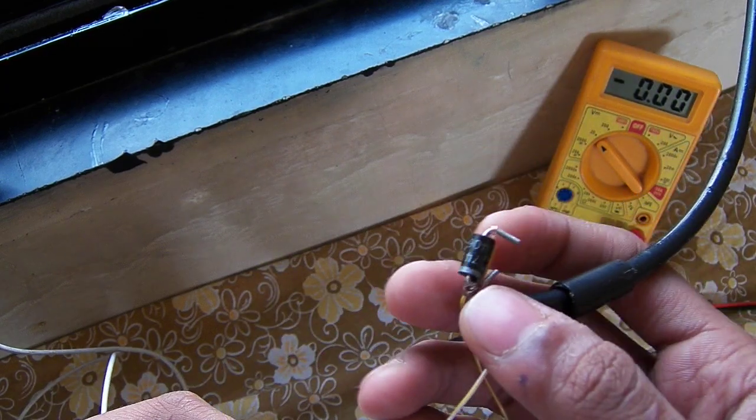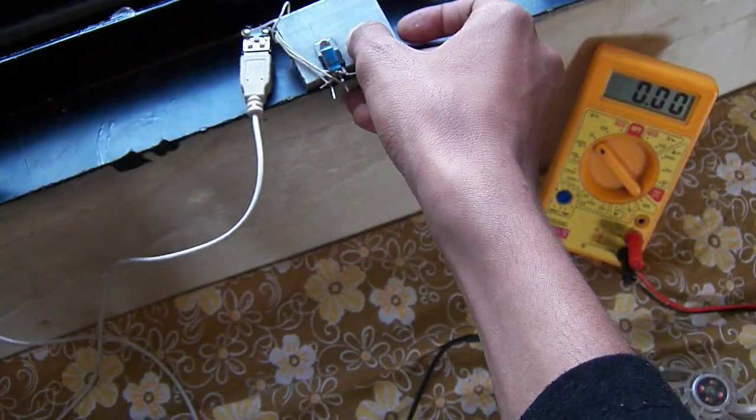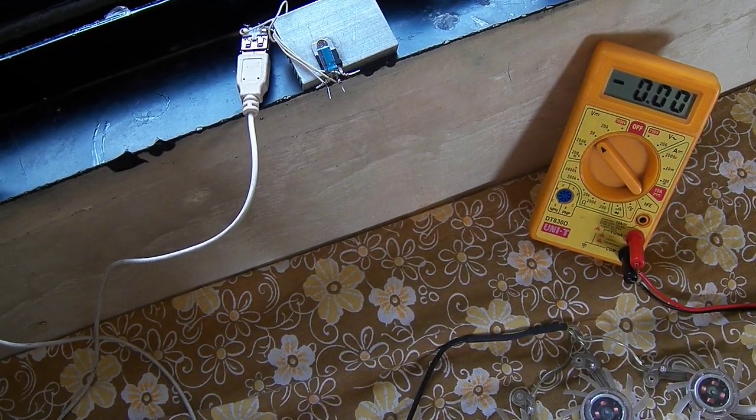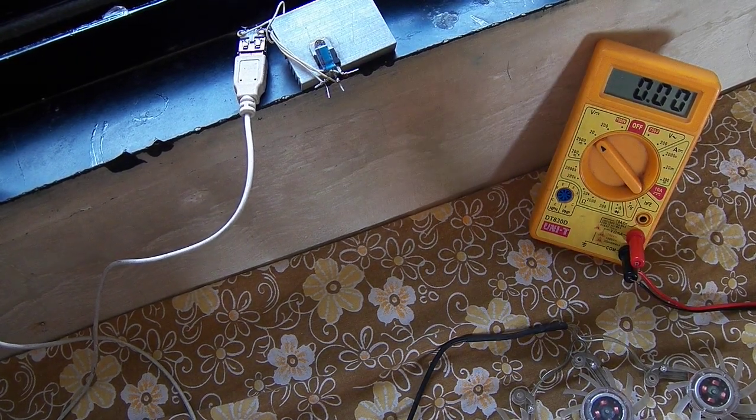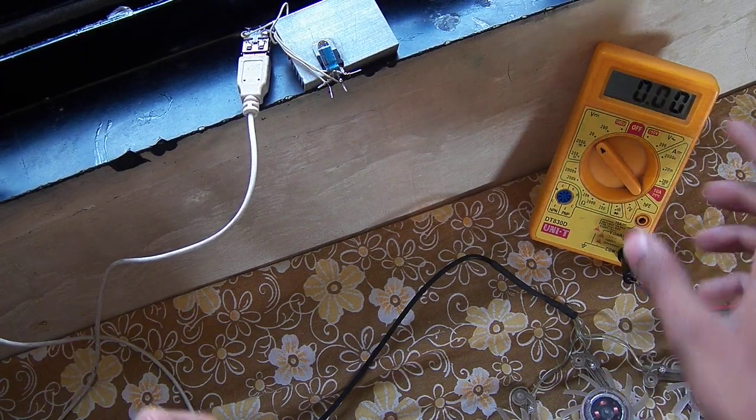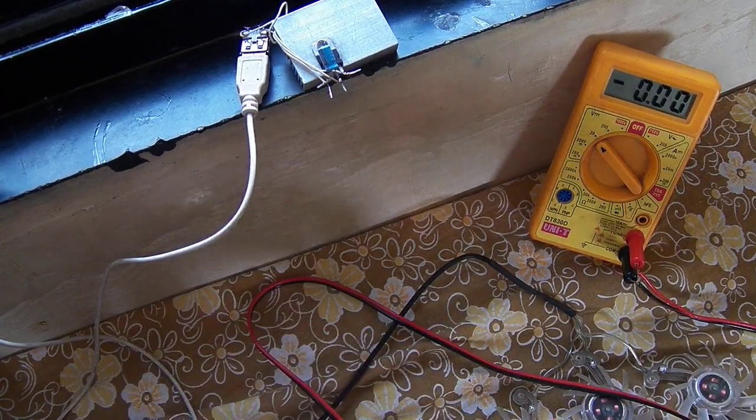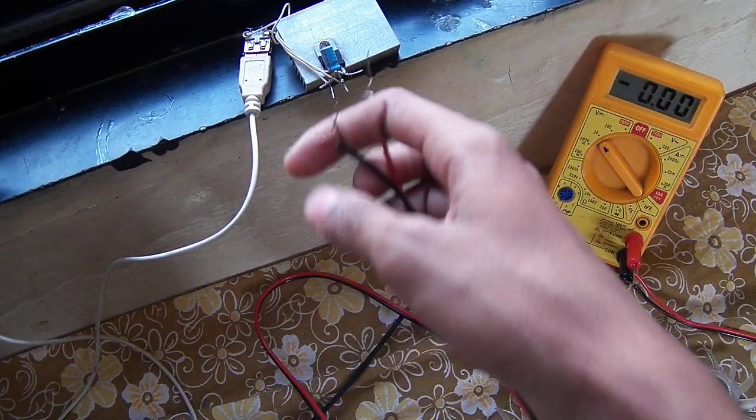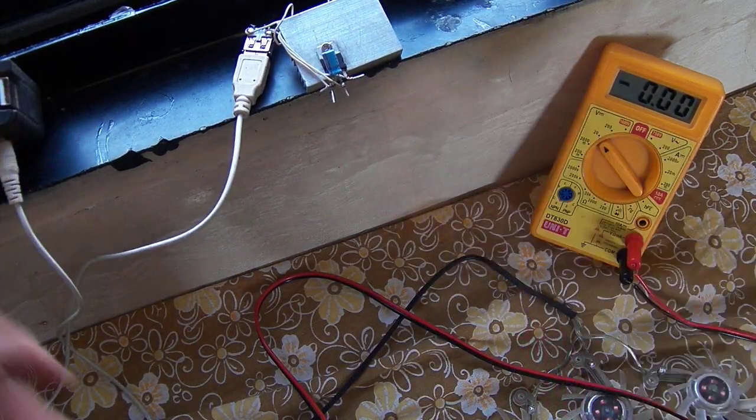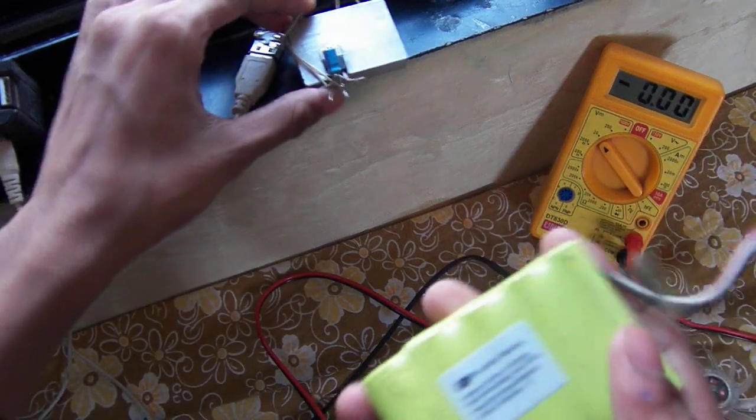The output of my system is about 600 milliamps at 5 volts. I will show you here - this is my voltmeter now.